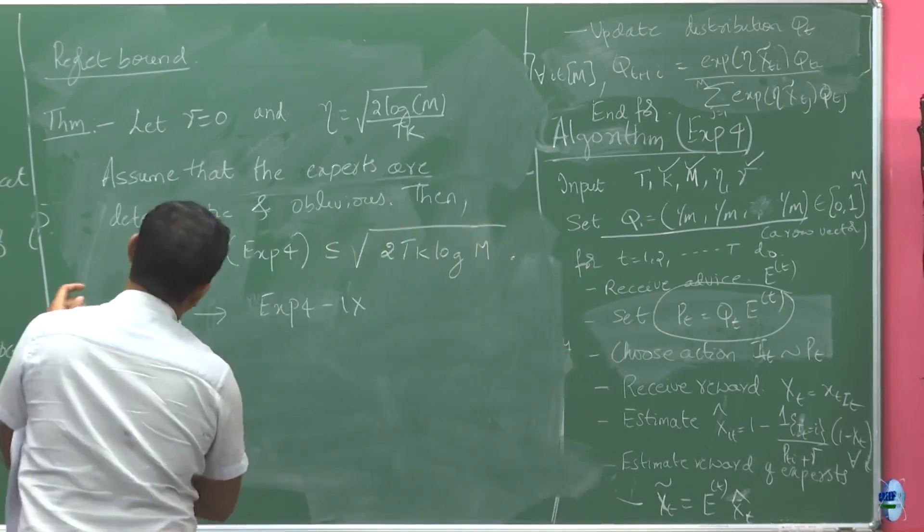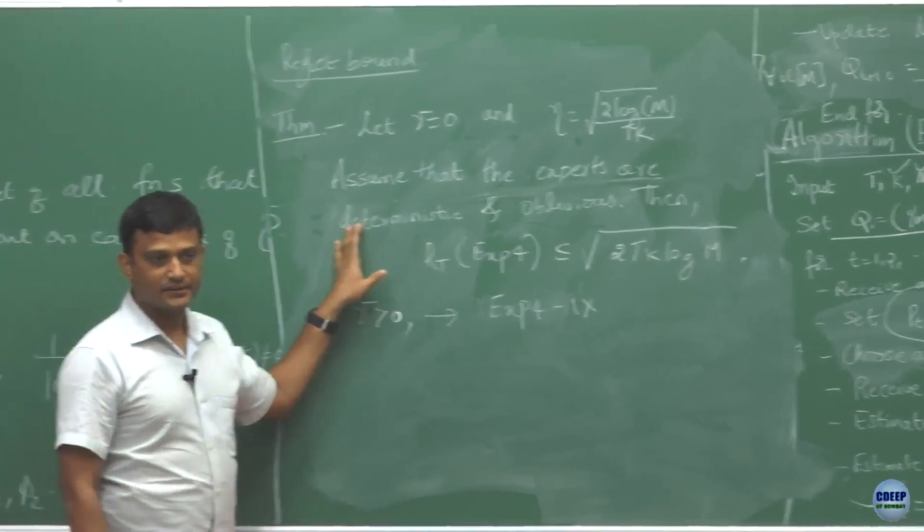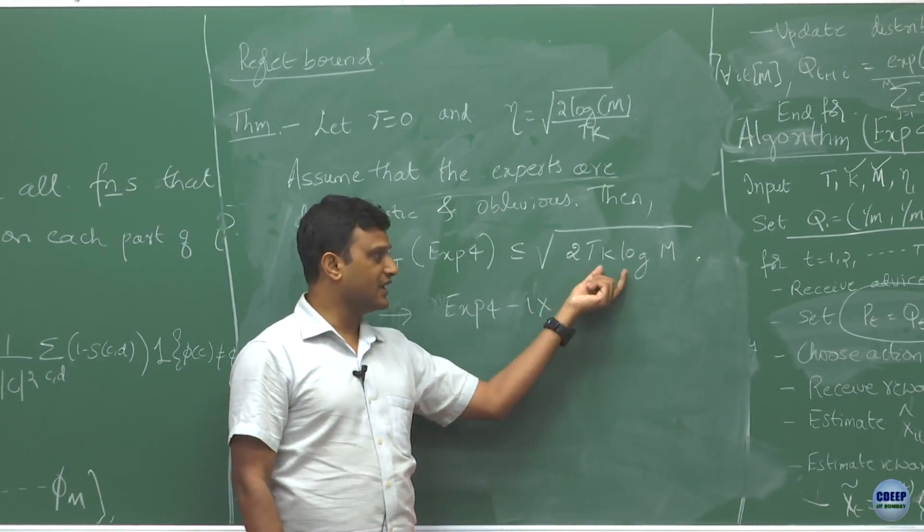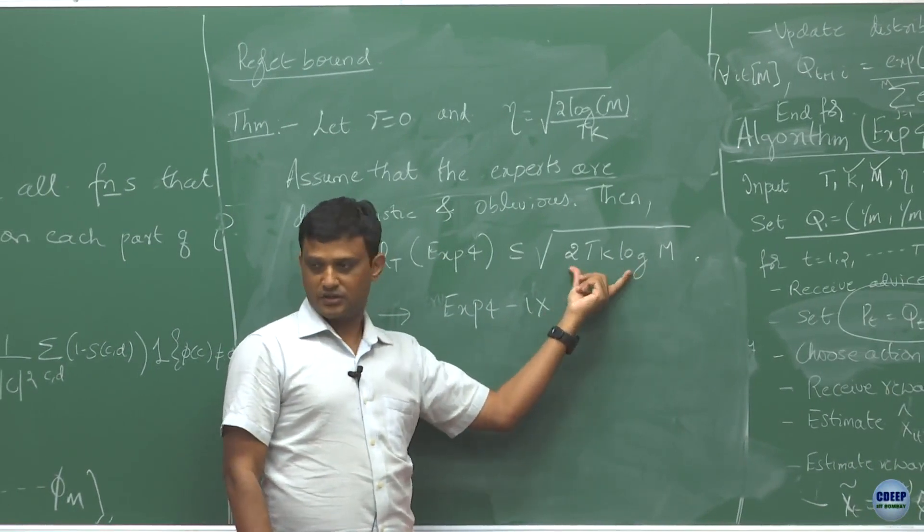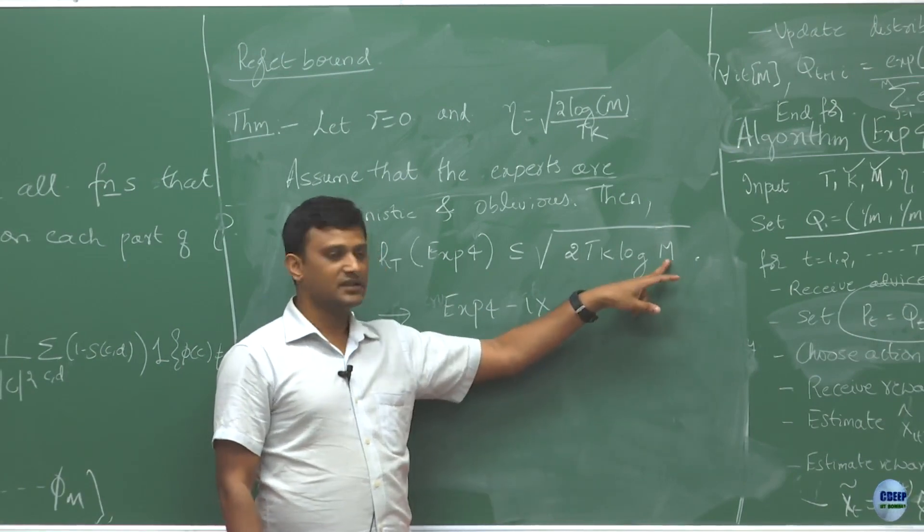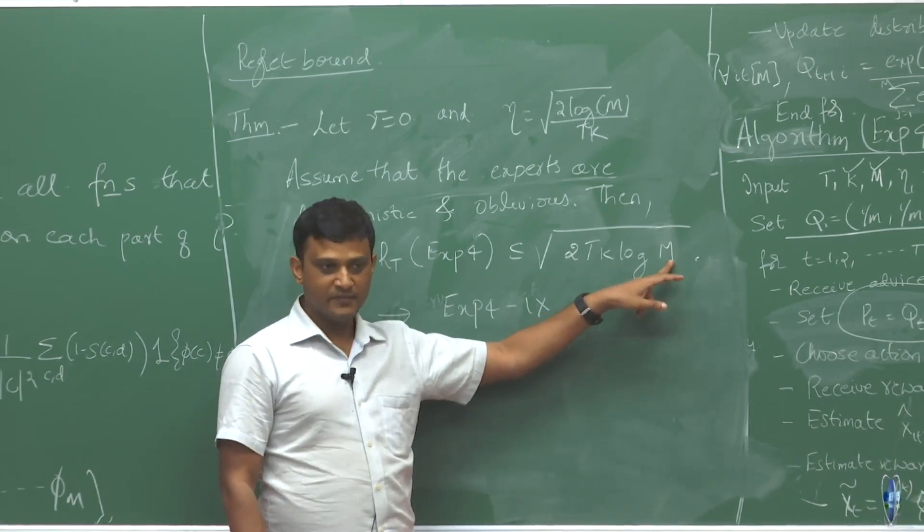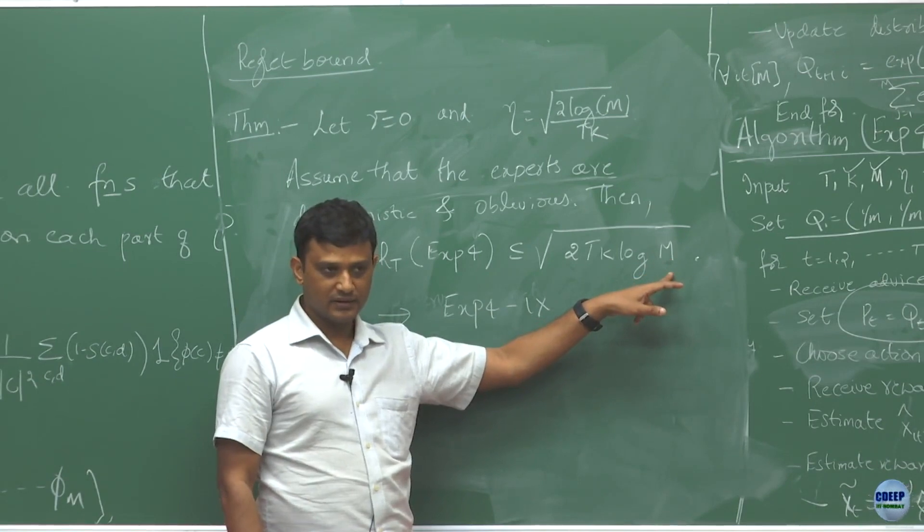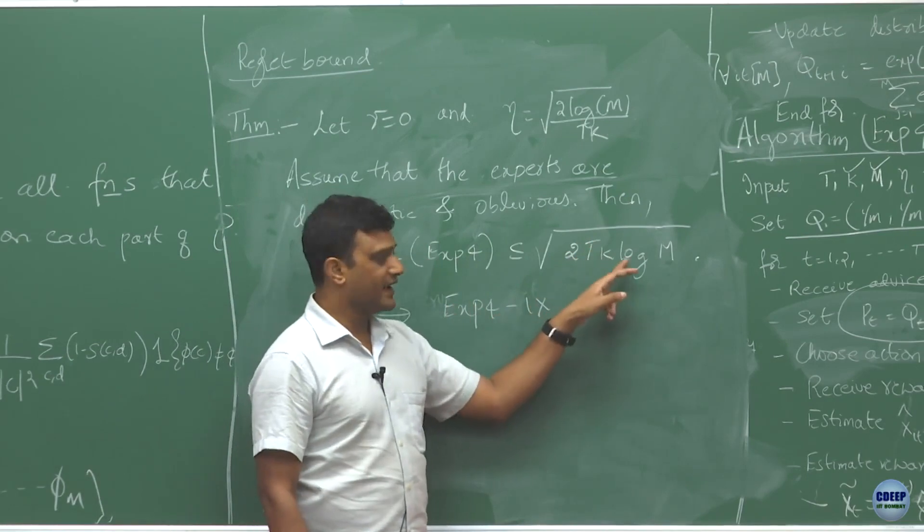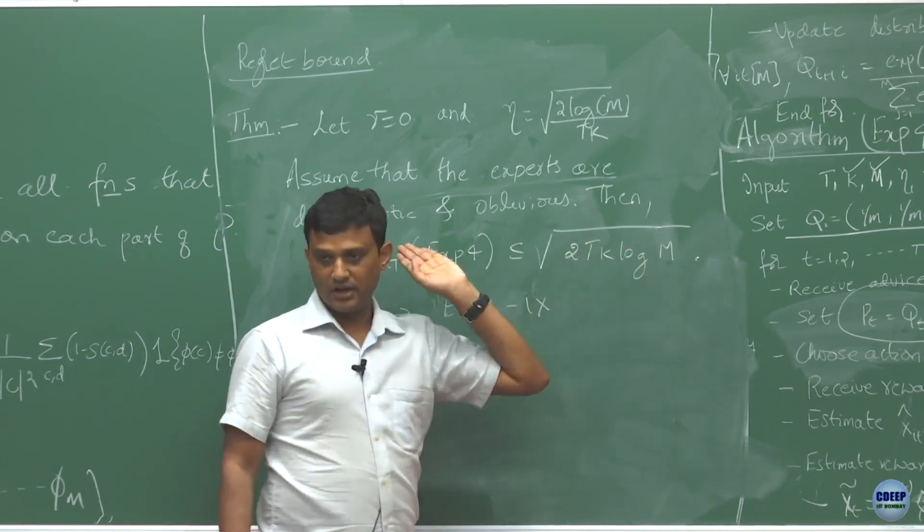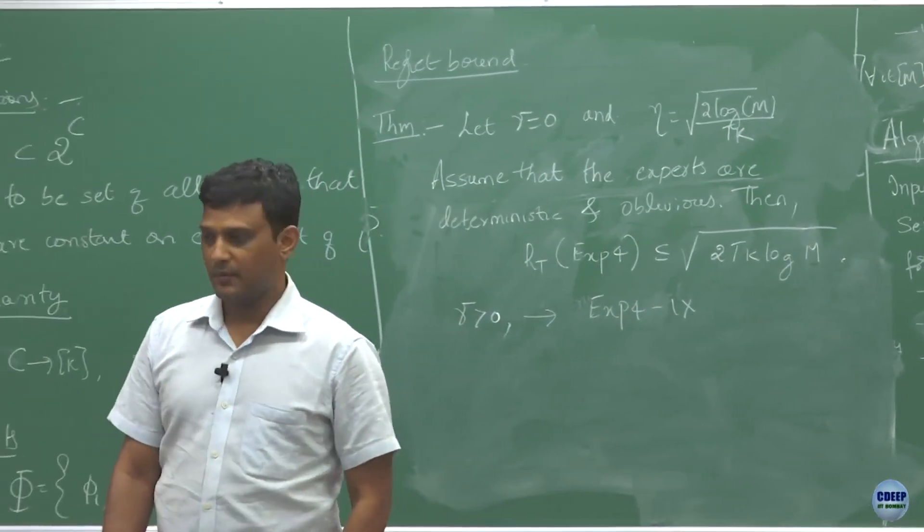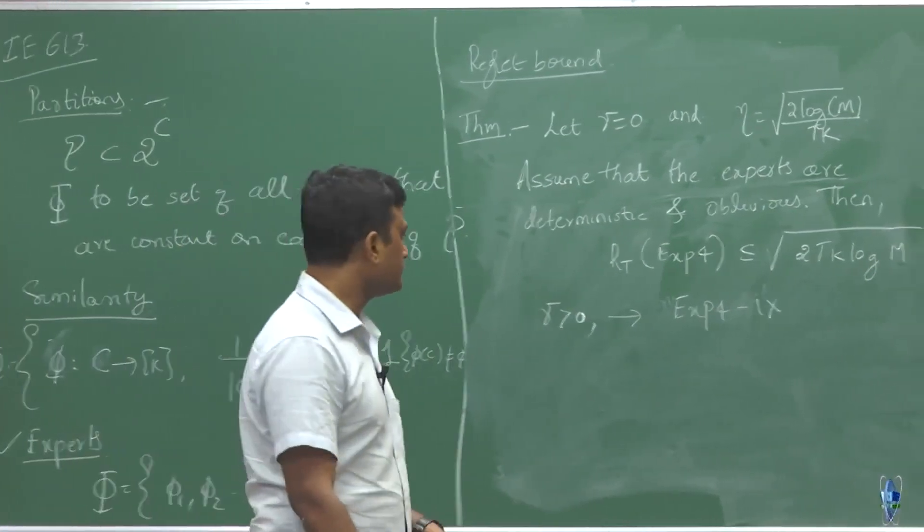In that case, then the regret we are going to get is square root of 2TK log M. This looks very similar to what we had gotten for EXP3, except the fact that this is now M instead of K. The regret bound for EXP3 is 2TK log K, where K is the number of arms. But now that K has become M, where M corresponds to the number of experts.